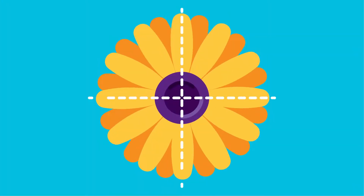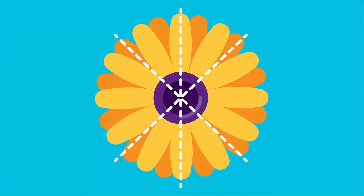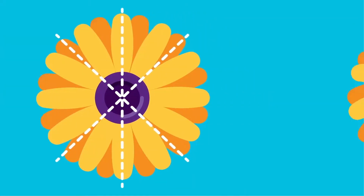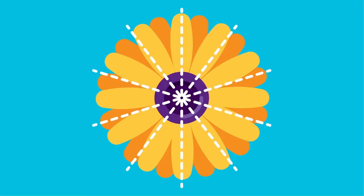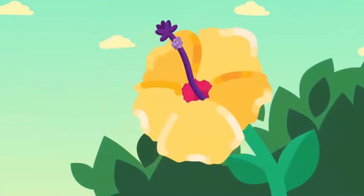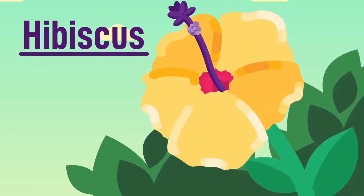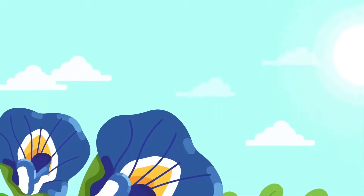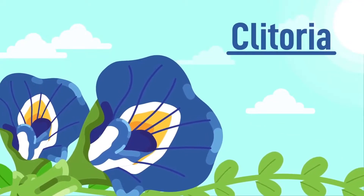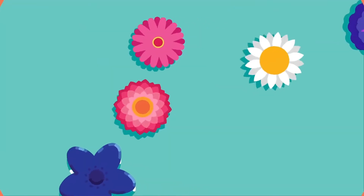Flowers which can be divided into two equal halves along more than one longitudinal plane passing through the center of the flower are called regular or radially symmetrical flowers — an example is the hibiscus. Flowers which can only be halved along one longitudinal plane are described as bilaterally symmetrical, such as clitoria. All these characteristics showcase the wonderful biological diversity of flowers.